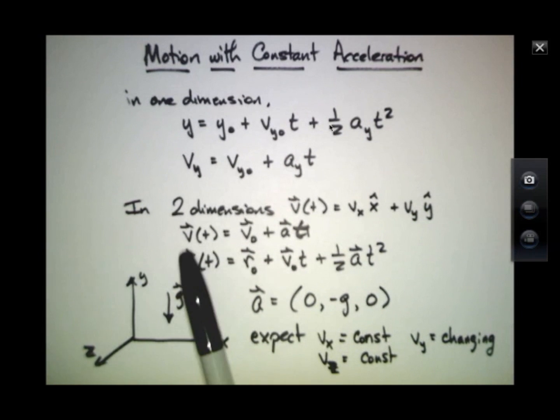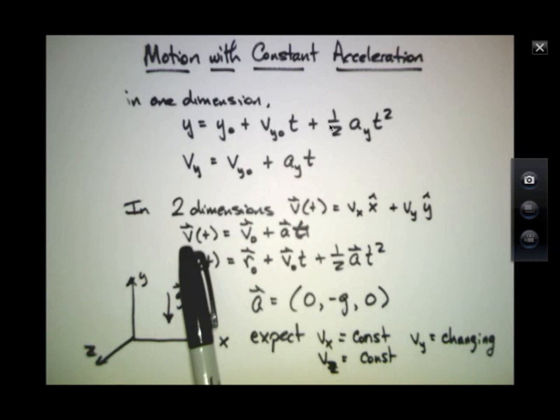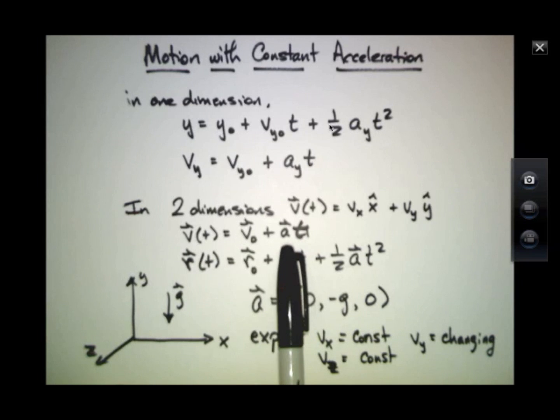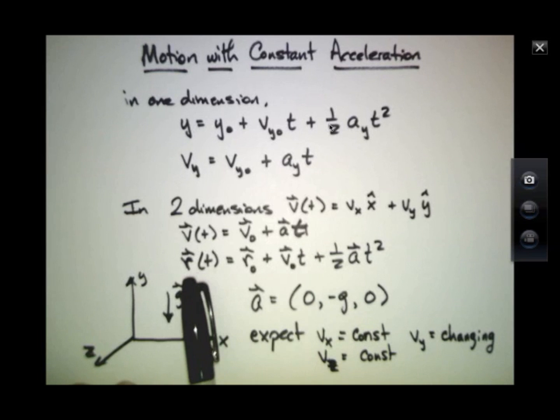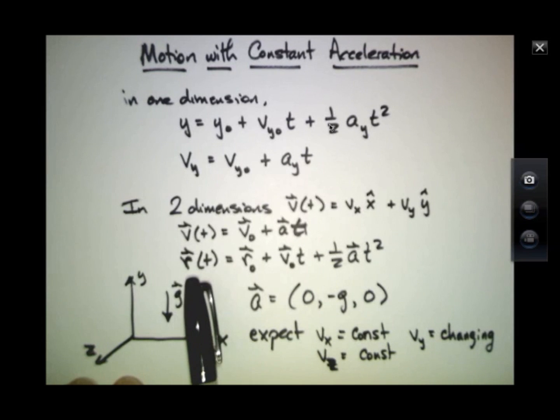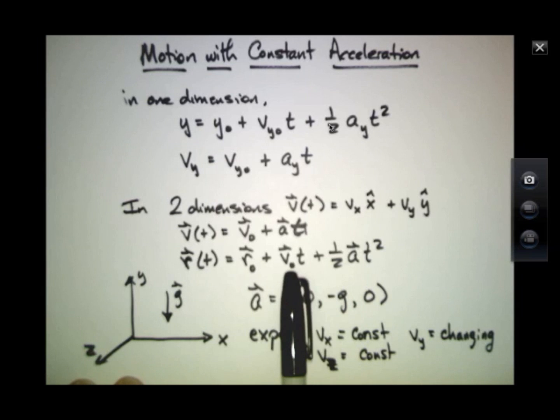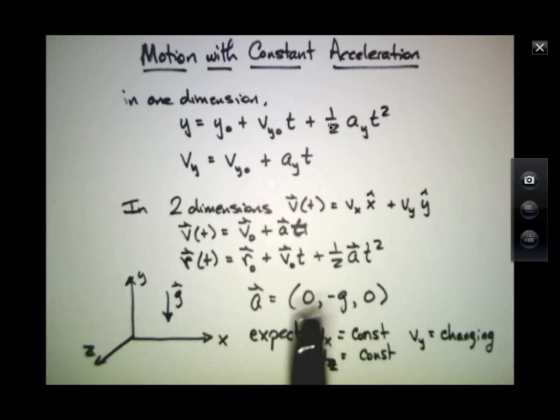These equations separate out as vectors. There's an x-component of velocity that depends on the initial x velocity plus the acceleration in the x-direction times time. And the position, r of t, has an x-component that depends on the initial x and the initial velocity in the x-direction times t times the acceleration in the x-direction times t-squared and so on.